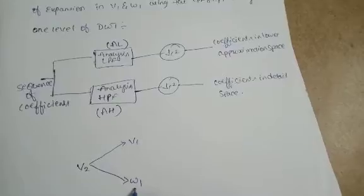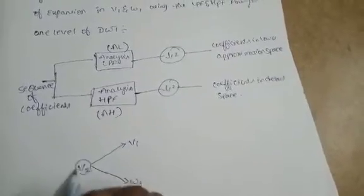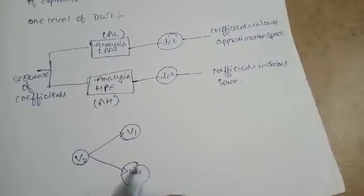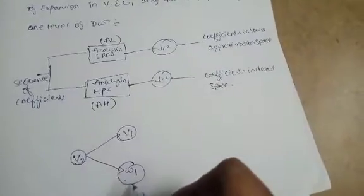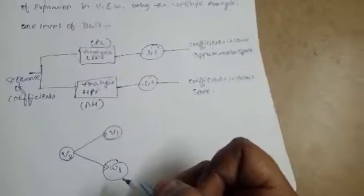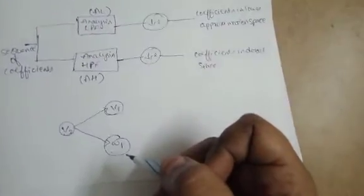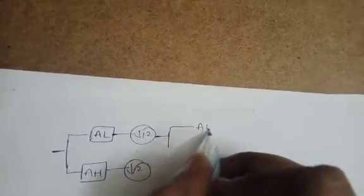At the next level, we see the coefficients decomposed — V2 and V1 are decomposed with W1. For the next level, the same process applies: AL (analysis low-pass filter) and AH (analysis high-pass filter) with down-sampling.